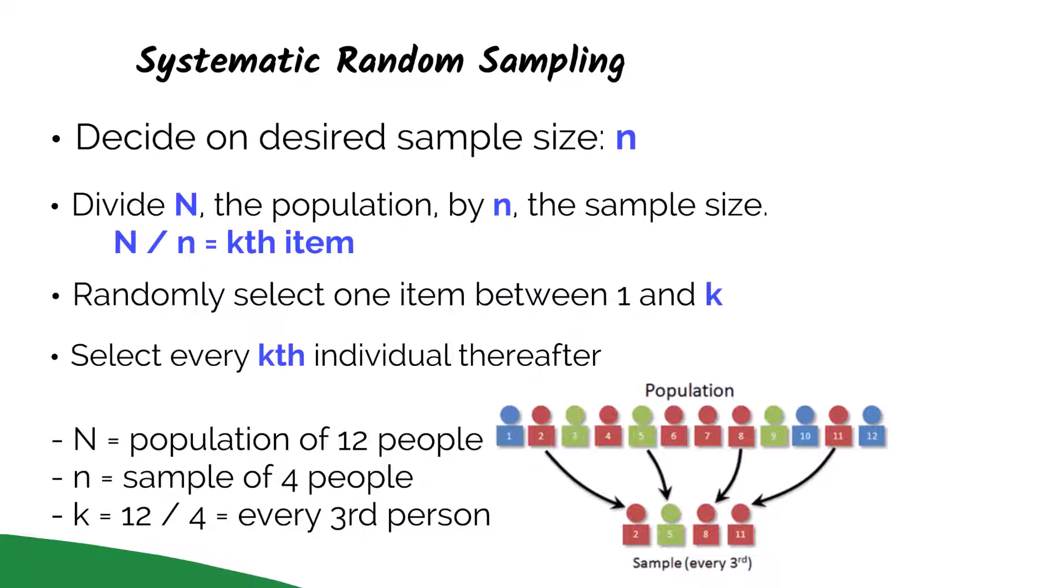From there, you will count every third person thereafter, and they will be a part of my sample. So going up three gives me the fifth person, and then going up three again gives me the eighth person. Finally, going up three again gives me the eleventh person. We have now sampled every third person starting at the number two.